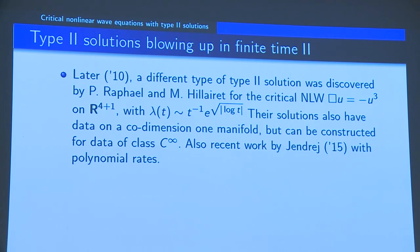After a five-year lapse, there is recent work by Jacek Jendrej who constructs polynomial blow-up rates, more similar to the ones displayed before in 5+1 dimensions. He gets better control on the stability of such solutions and characterizes that in terms of the radiation that comes out at the blow-up time.